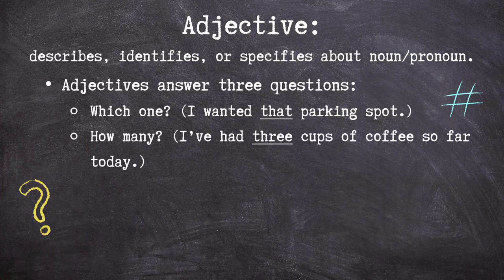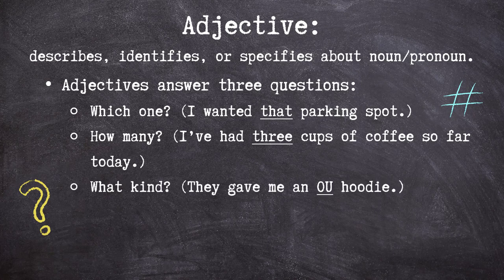Second, we have: how many? Like, 'I've had three cups of coffee so far today.' And finally, what kind? As we see in, 'they gave me an OU hoodie.'